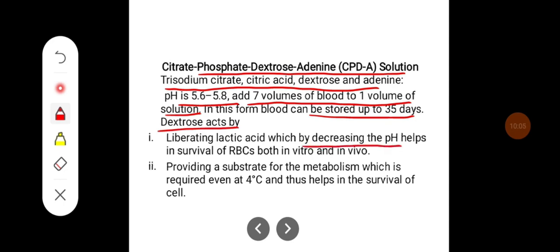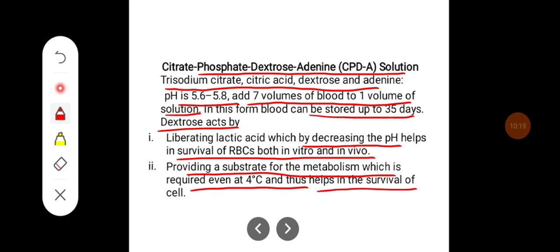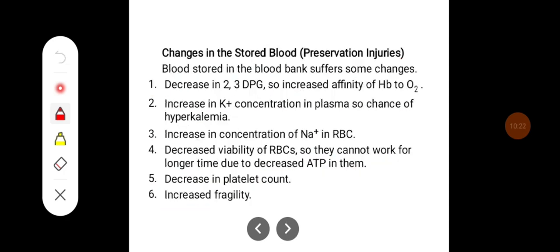Dextrose acts by liberating lactic acid, which by decreasing pH helps in the survival of RBCs both in vitro and in vivo, providing substrate for metabolism required even at 4 degrees Celsius, and thus helps the survival of the cells.